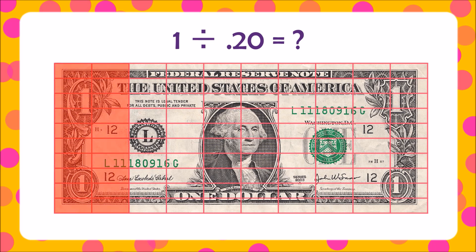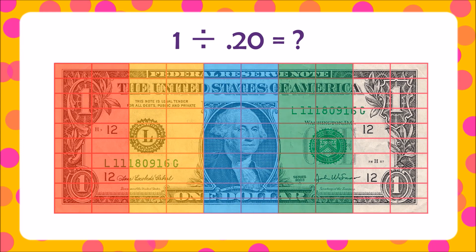Here's 20 hundredths, 20 hundredths, 20 hundredths, 20 hundredths, 20 hundredths. We repeatedly subtracted — or divided — and found that one whole divided by 20 hundredths equals five.